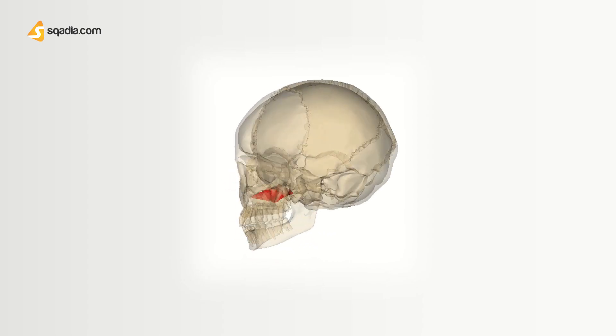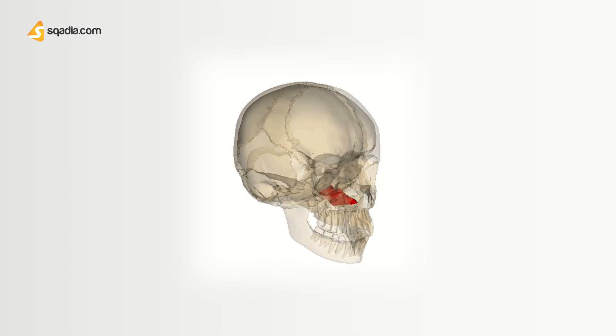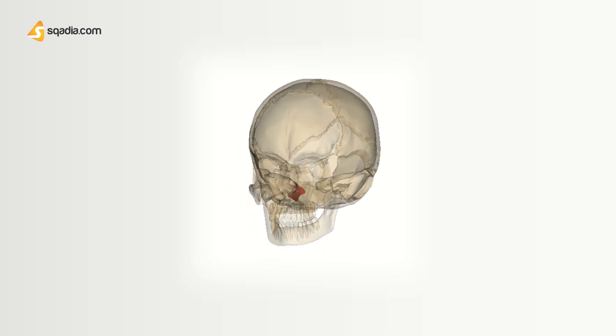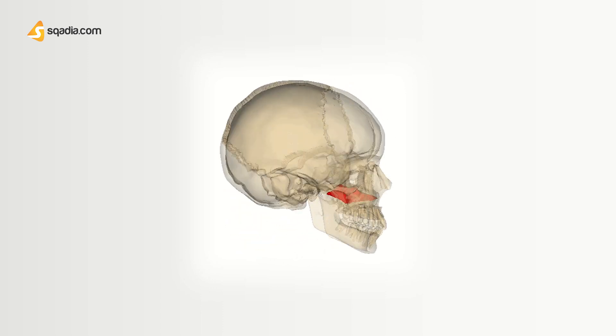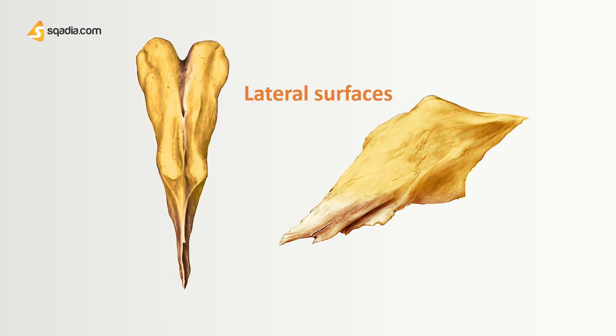Since the Vomer is a very tiny bone, let's discuss its anatomical landmarks in detail. The Vomer is in the median plane, meaning it is towards the midline of the body. Its anterior portion is mostly bent to one side. It is somewhat quadrilateral in shape and has two lateral surfaces and four borders.